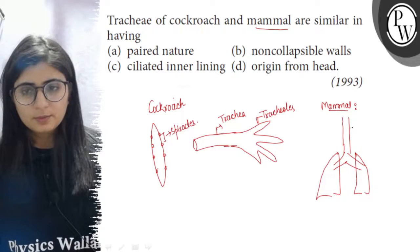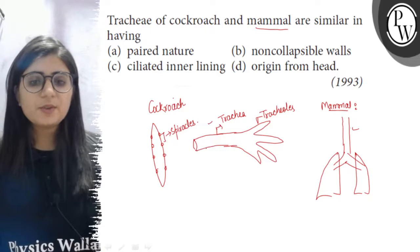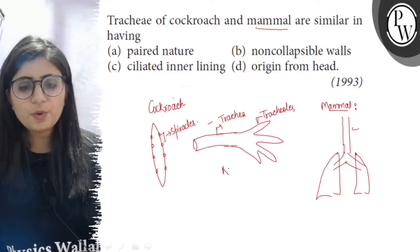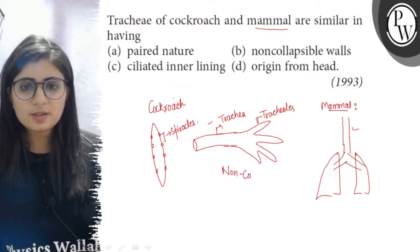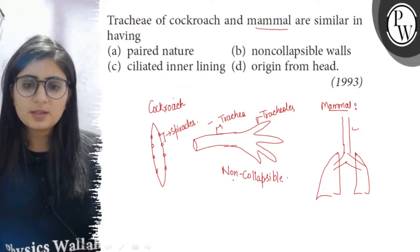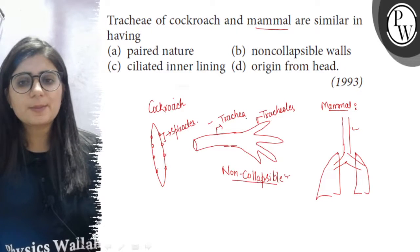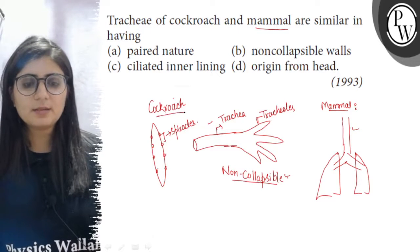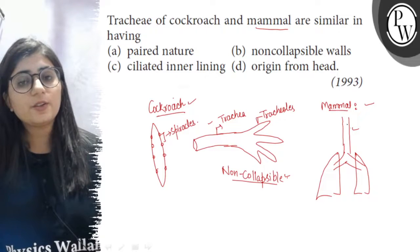One thing is common in both these trachea: they are non-collapsible. It means when there is no air in them they do not collapse. This non-collapsible nature is present in both cases, in the trachea of cockroaches and in the trachea of mammals.